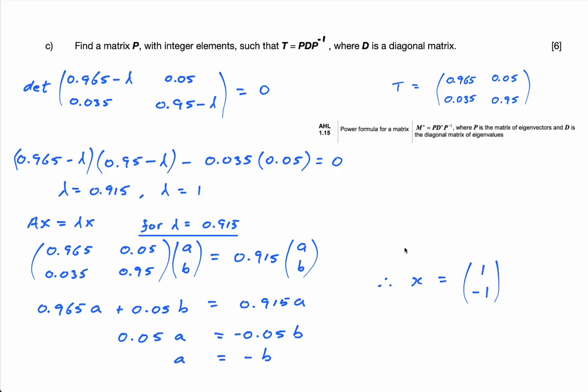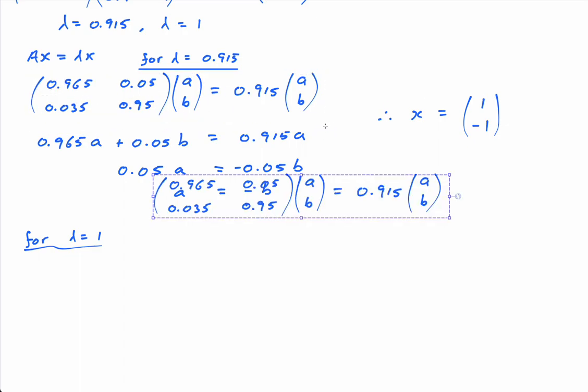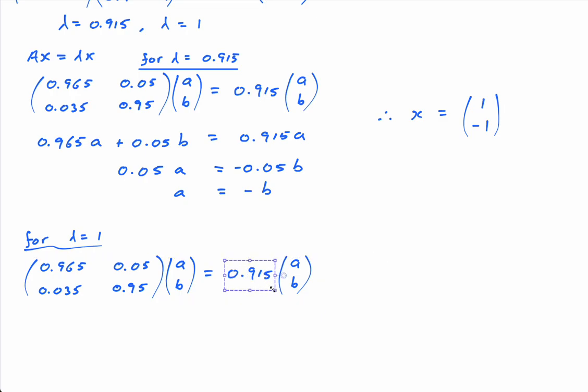And then we've got to do for lambda equals 1. So for lambda equals 1, same thing. And if you don't mind, I'm going to copy and paste this. But instead of 0.95, it's 1, so it's just equal to this. So I have 0.965a plus 0.05b is equal to a. And I get, let's just do 0.05b equals 0.035a.